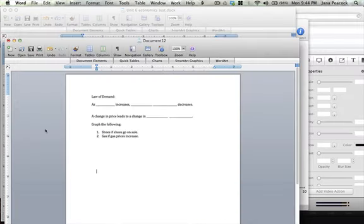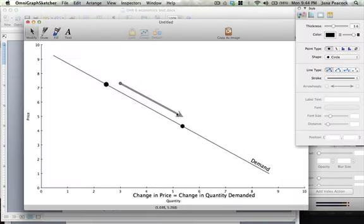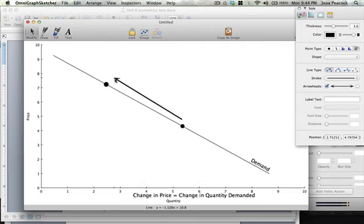Now if we take a look at our example here, gas, if gas prices increase. So if we take a look at gas prices right here, if gas was say $3.75 a gallon and that price went up to say $7.25 a gallon, we can see that we will sell less gas. Our quantity sold will decrease.